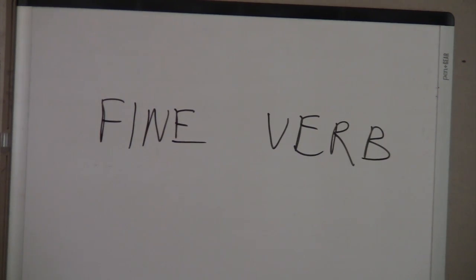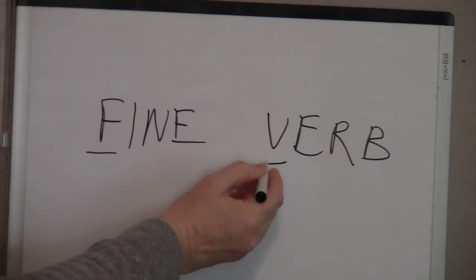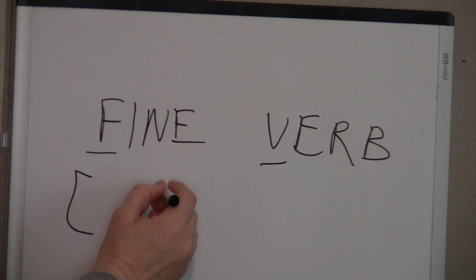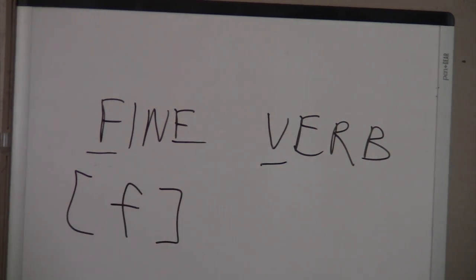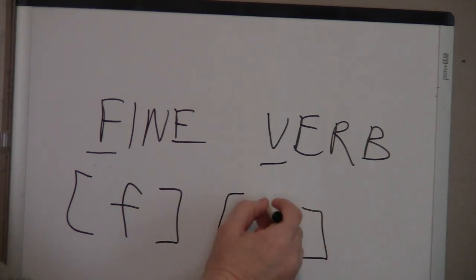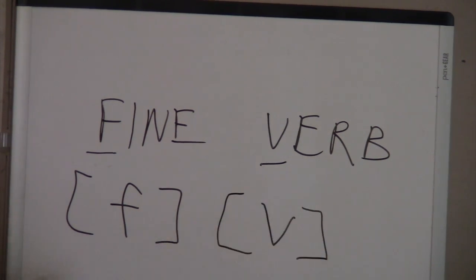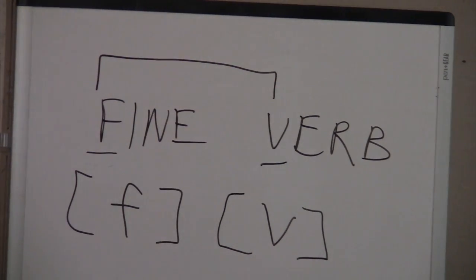Next we have fuh and vuh. The symbol for the fuh sound is a lowercase f, and the symbol for the vuh sound is a lowercase v. These are cognates — fuh and vuh.